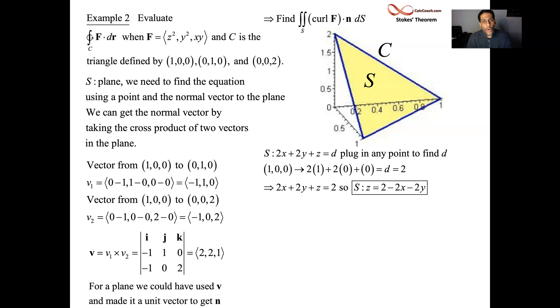So move the 2x and the 2y over. z is equal to 2 minus 2x minus 2y. This is our surface. And doing a surface integral, you have to come up with the equation of the surface, or maybe it's given to you. We had to come up with it. We had to work it in. But we have it.